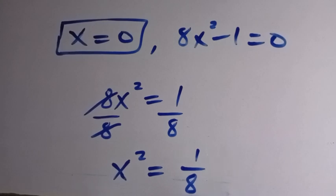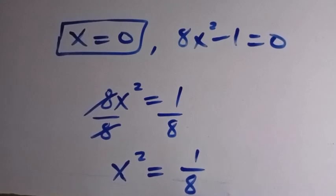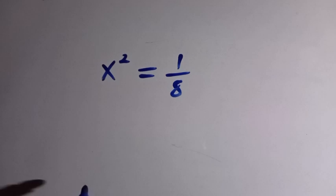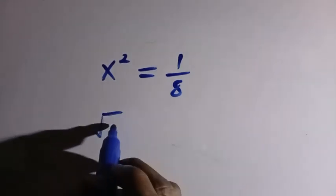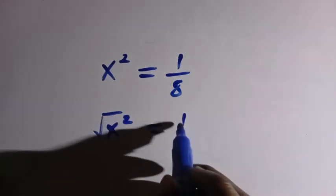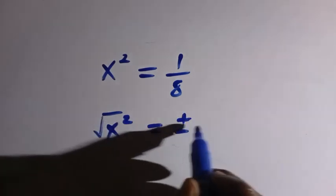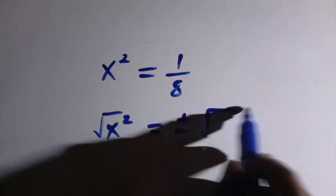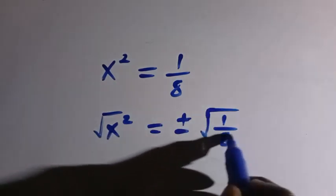Then we proceed by taking the square root of both sides. The square root of both sides, we have the square root of x squared equals plus or minus square root 1 over 8.